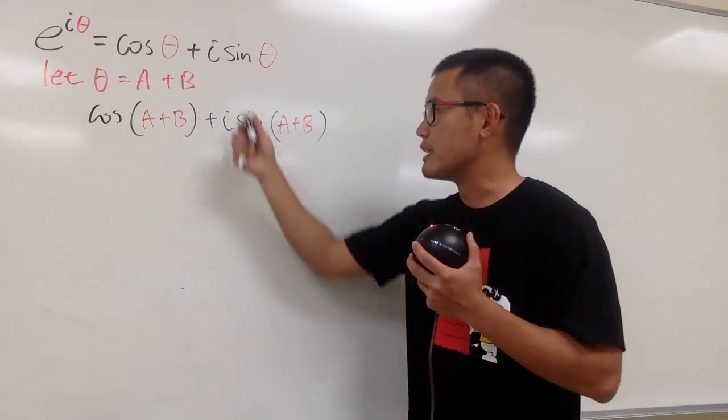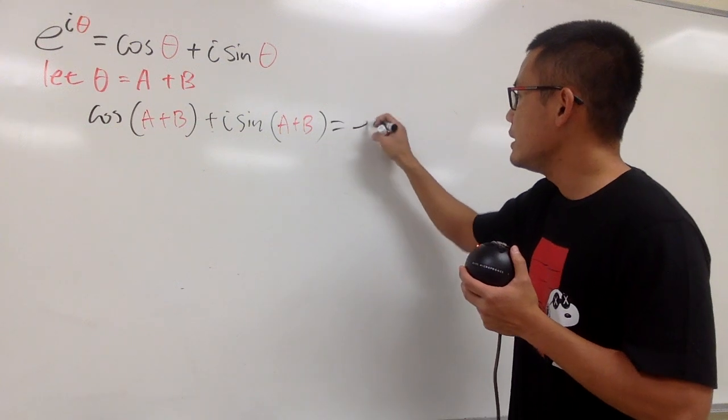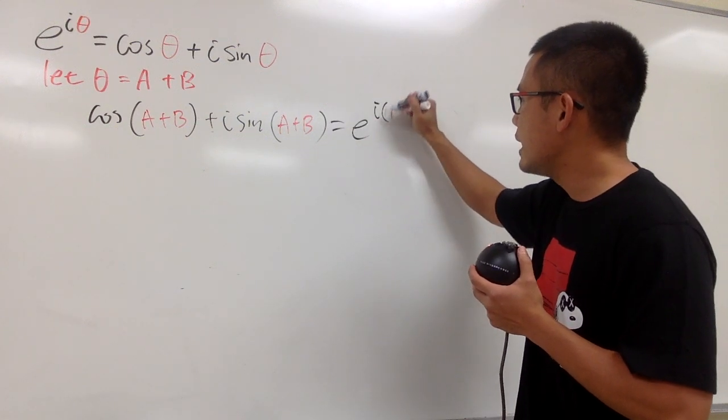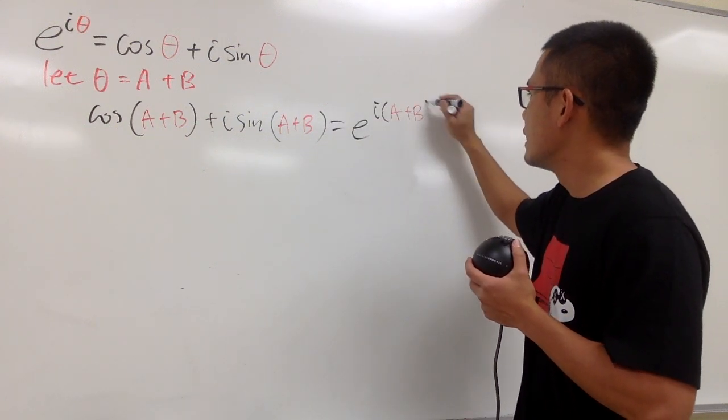And then, we will have to do the same thing to this, right? So we will have e to the i times a plus b, like this.